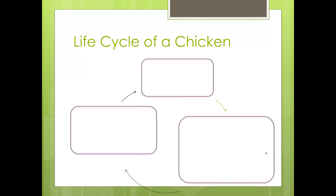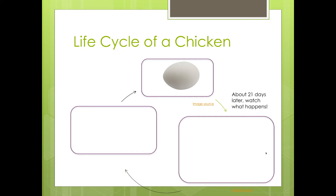Here is the life cycle of a chicken. First you have the egg, and then about 21 days later, I want you to watch what happens.